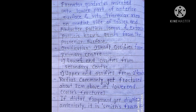Abductor pollicis longus and extensor pollicis brevis arise from the posterior surface. For ossification of the radius: the shaft ossifies from a primary center. The lower end ossifies from a secondary center, and the upper end also ossifies from a secondary center. So lower and upper ends ossify from secondary centers while the shaft ossifies from the primary center.